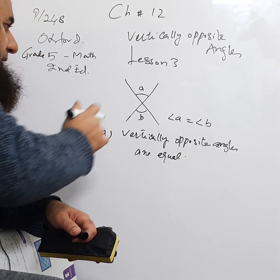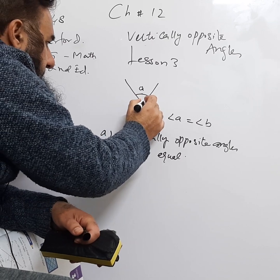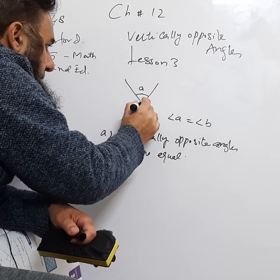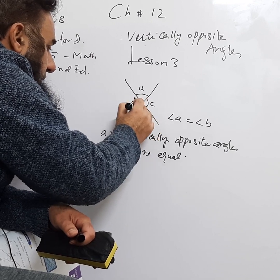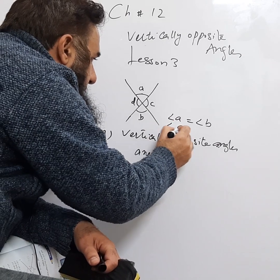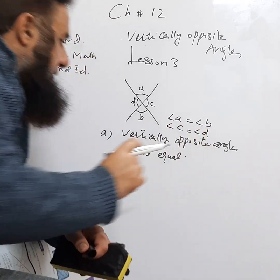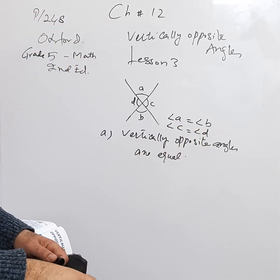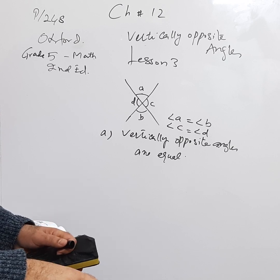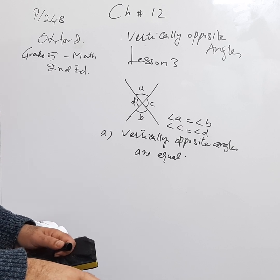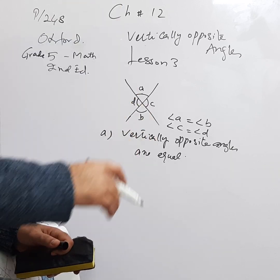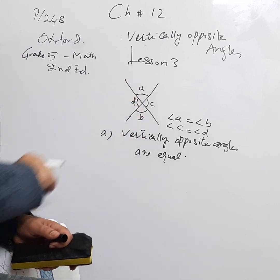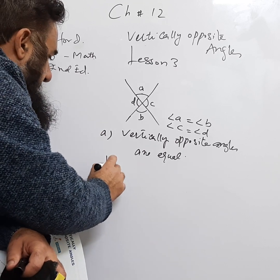So the first key point is: vertically opposite angles are equal. Similarly, the other pair of opposite angles — let's call them C and D — are also equal, so angle C is equal to angle D. You need to memorize and understand this: wherever there is an X formed by two lines, the opposite angles are equal.